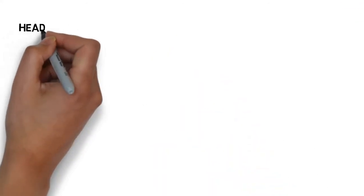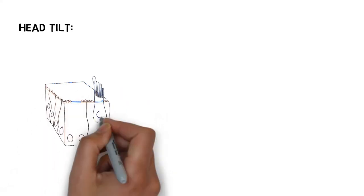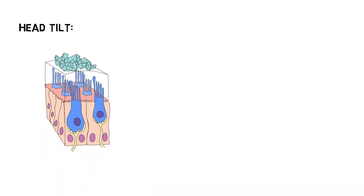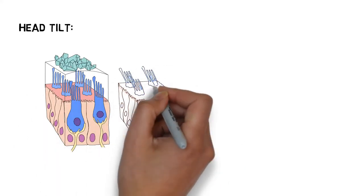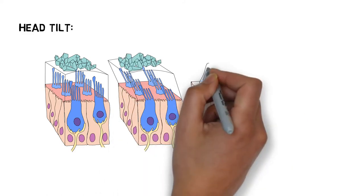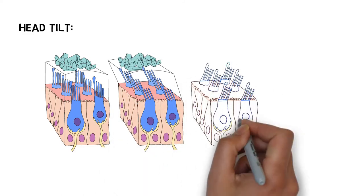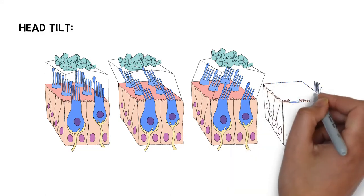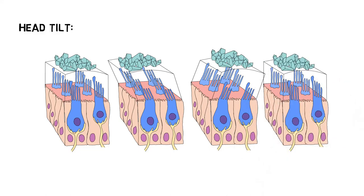Head tilt will do the same thing to the hair cells as motion does. The hair cells do not adapt to a constant head tilt. The hair cells will fire or stop firing, depending on the direction of the tilt, for as long as the head is tilted. The hair cell will return to baseline, firing only when the head returns to normal position.